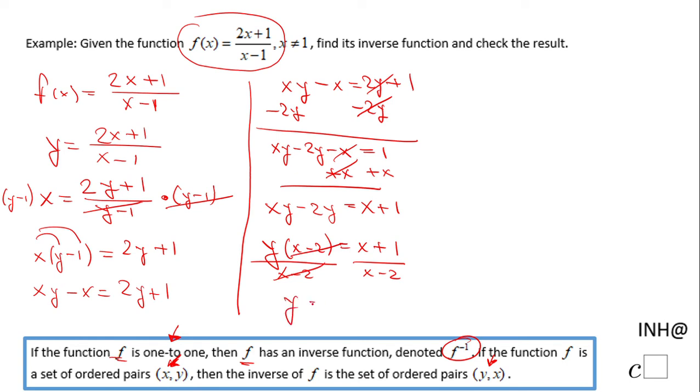And we have y equals x plus 1 over x minus 2. This is the inverse function. Of course, here we need to be sure x cannot be 2. And now I'm going to use the notation: the inverse function of f is f inverse of x equals x plus 1 over x minus 2.